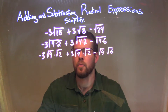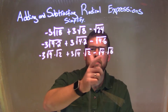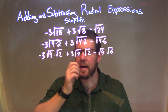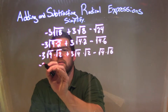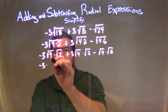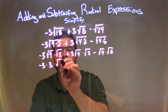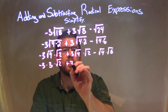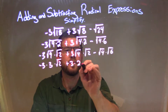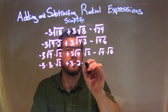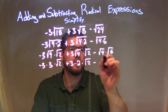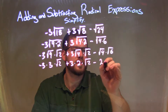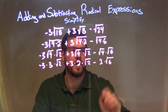Now we can take the square roots of everything — it's nice and easy. So we have negative 3 times the square root of 9, which is 3, times the square root of 2. Then 3 times the square root of 4, which is 2, times the square root of 2. And then minus the square root of 4, which is 2, times the square root of 6.